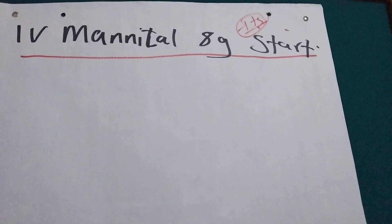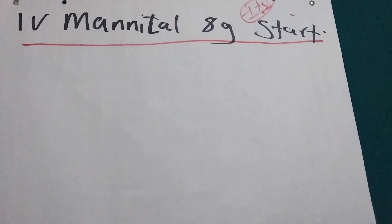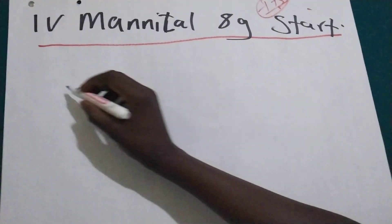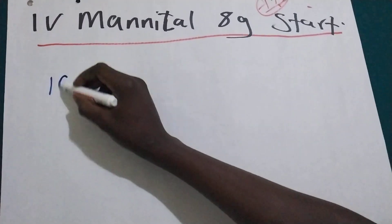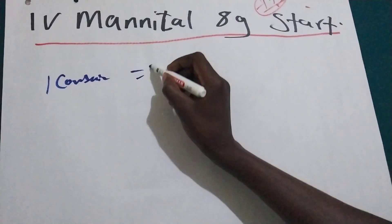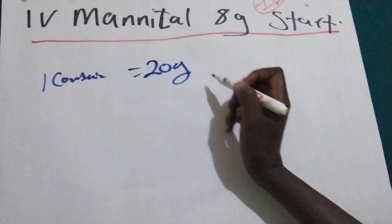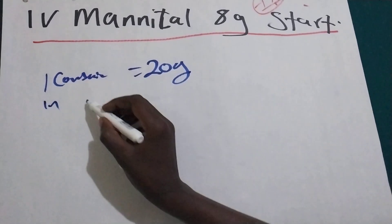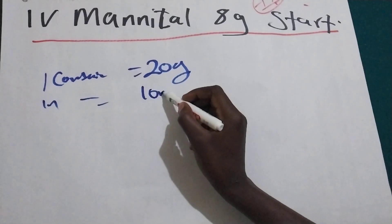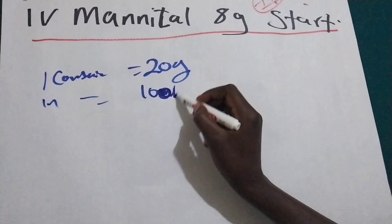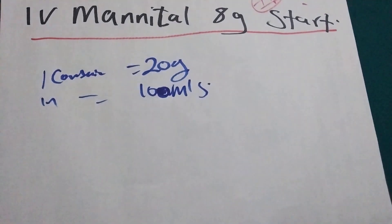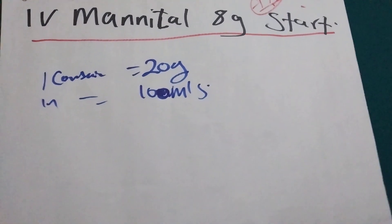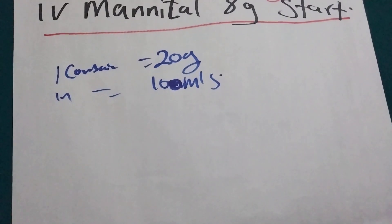Mannitol - one container has 20 grams in 100 ml, so it's already in liquid form. What we are going to do is just calculate and give.